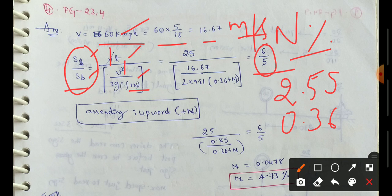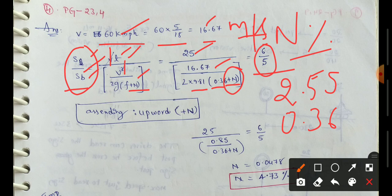Here, v cancels out. So using the driver reaction time value of 2.5 seconds, v is equal to 16.67 m/s. Then 2 multiplied by g value 9.81, and f value from given data is 0.36 plus n. The final function gives us the value of n. Using the ratio of lag distance to brake distance as 6 is to 5, we solve for n.